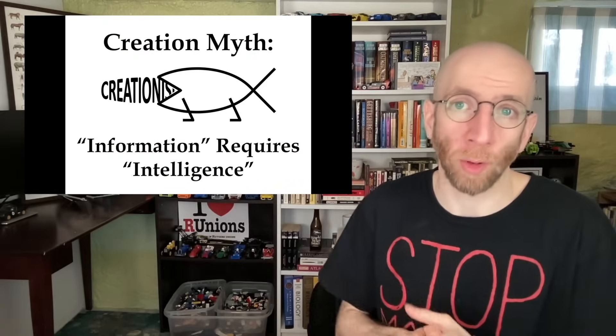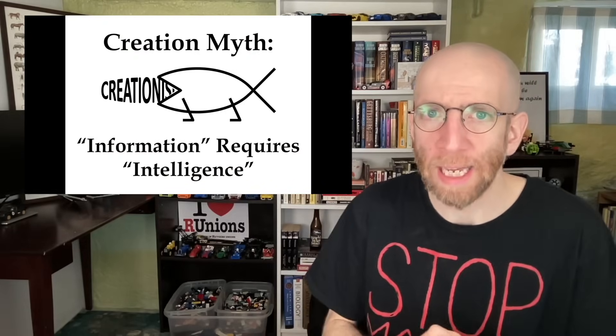Creationists care about this because they argue that information only comes from intelligent sources. They claim that from our uniform and repeated experience — the basis of all scientific reasoning about the past — information, especially in digital form, always comes from an intelligent source, whether a paragraph in a book, a section of software, a hieroglyphic inscription, or information embedded in a radio signal. Whenever we trace information back to its ultimate source, we inevitably find a mind, not a material process. Now this is wrong, and I've covered that before.